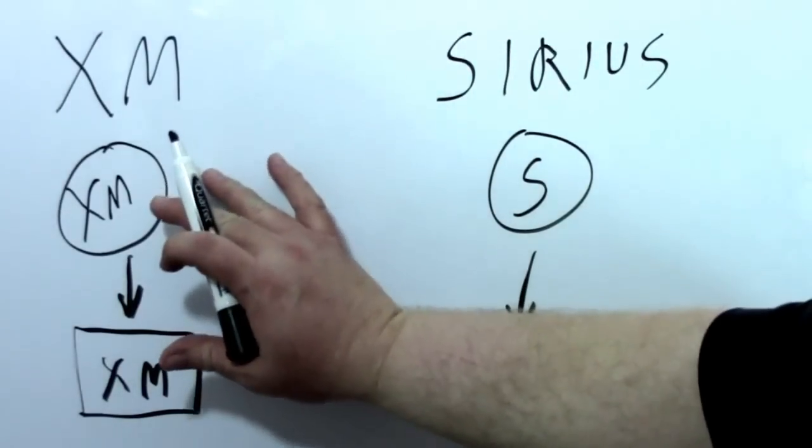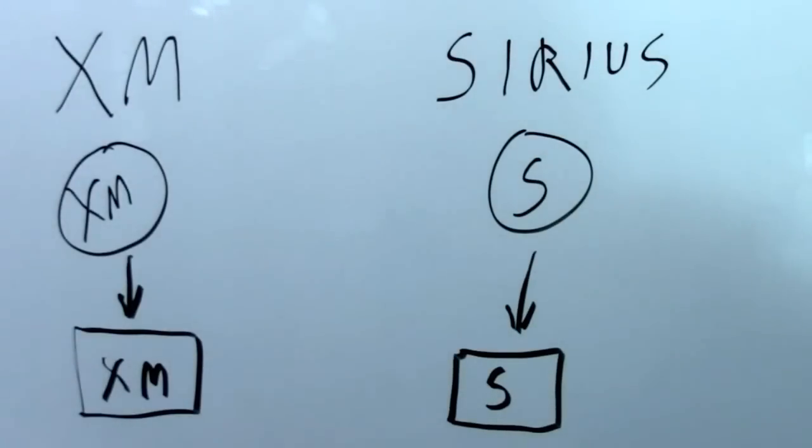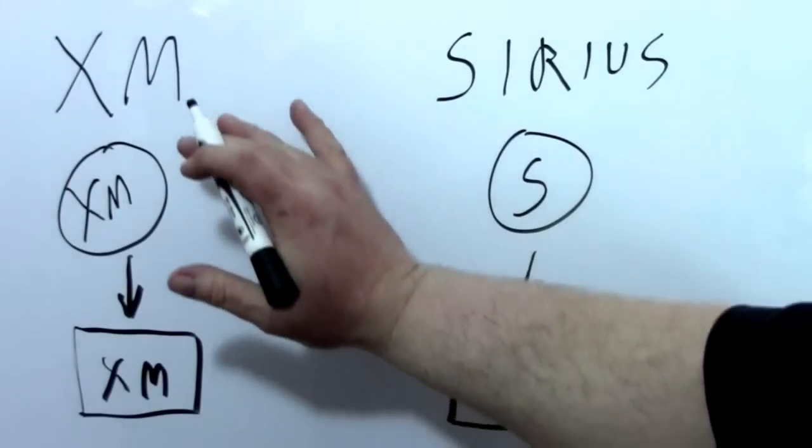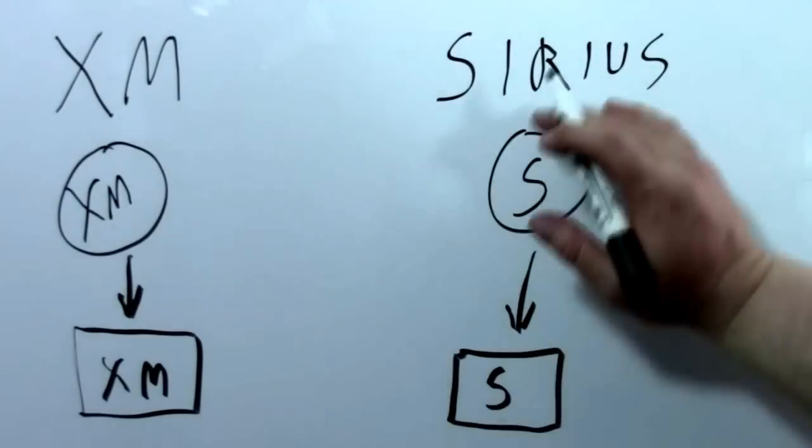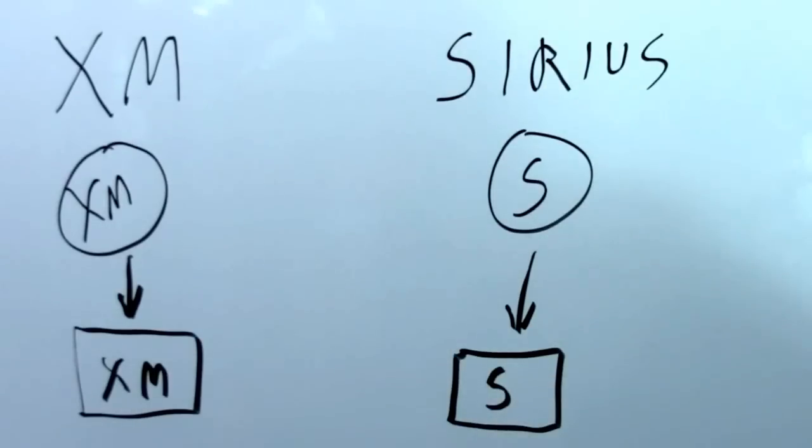Basically XM radio and Sirius radio were licensed their own frequencies by the FCC to use on their radio stations. The frequencies are near each other but they're different frequencies. So the XM satellite used its own frequencies for its own radio and the Sirius satellite used its own frequencies for its own radio.